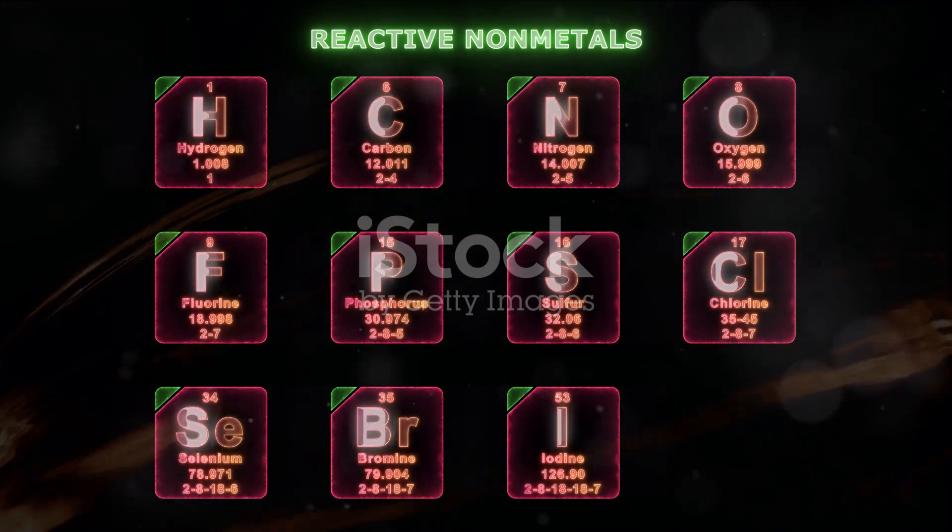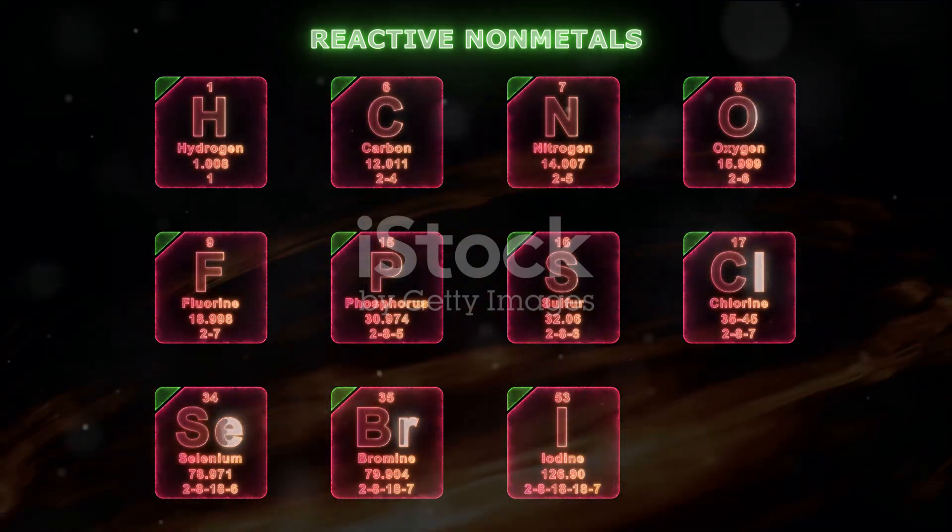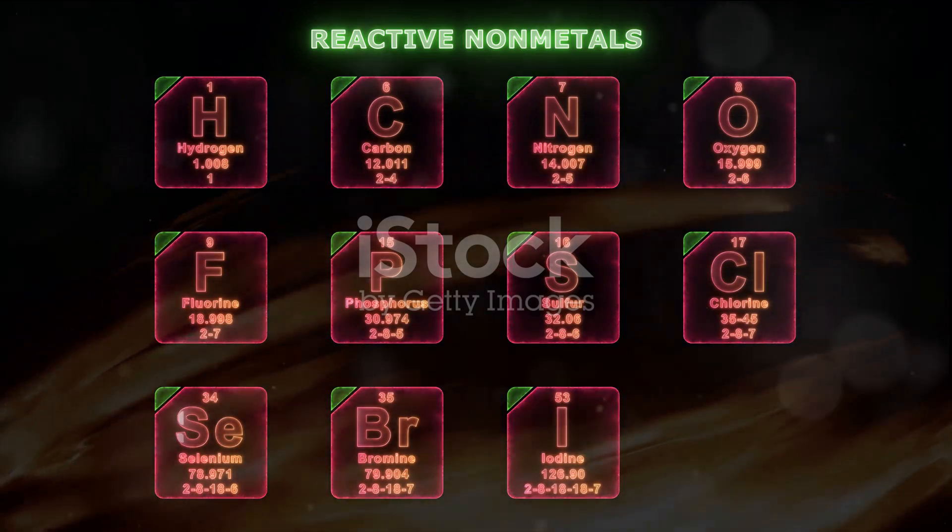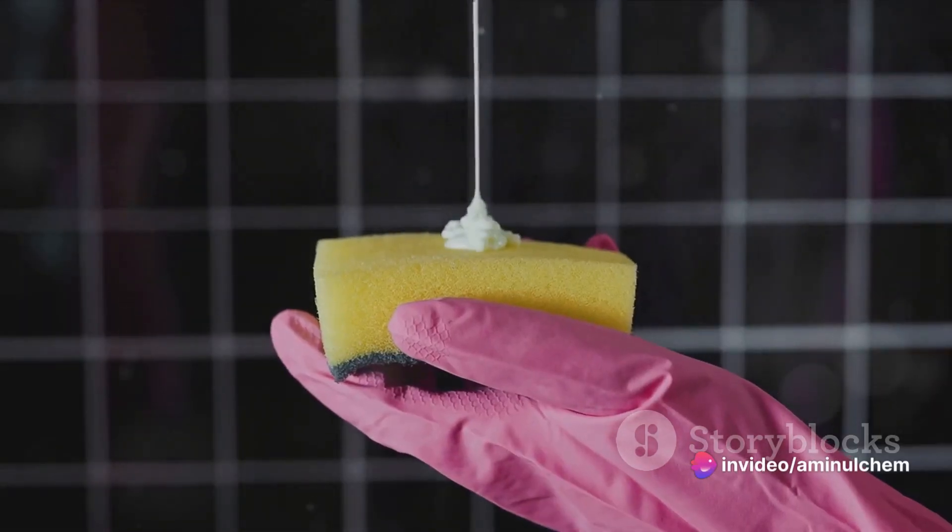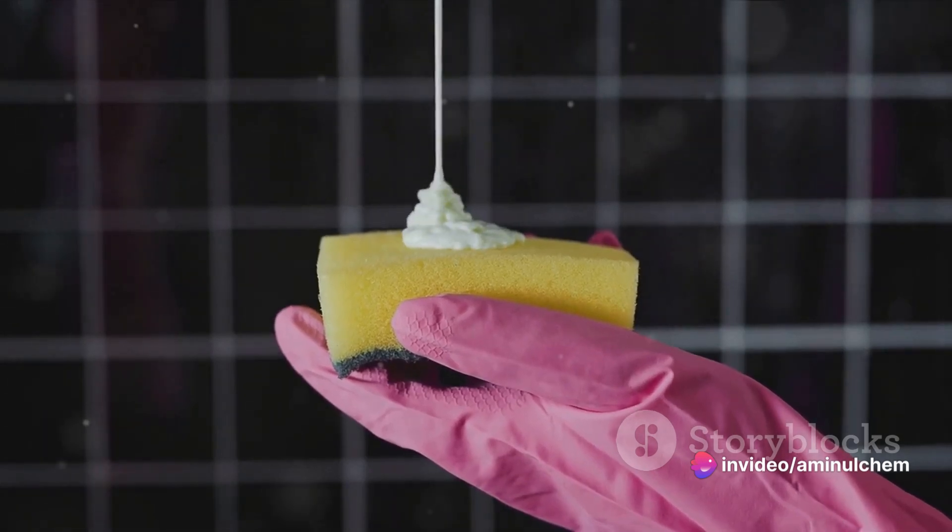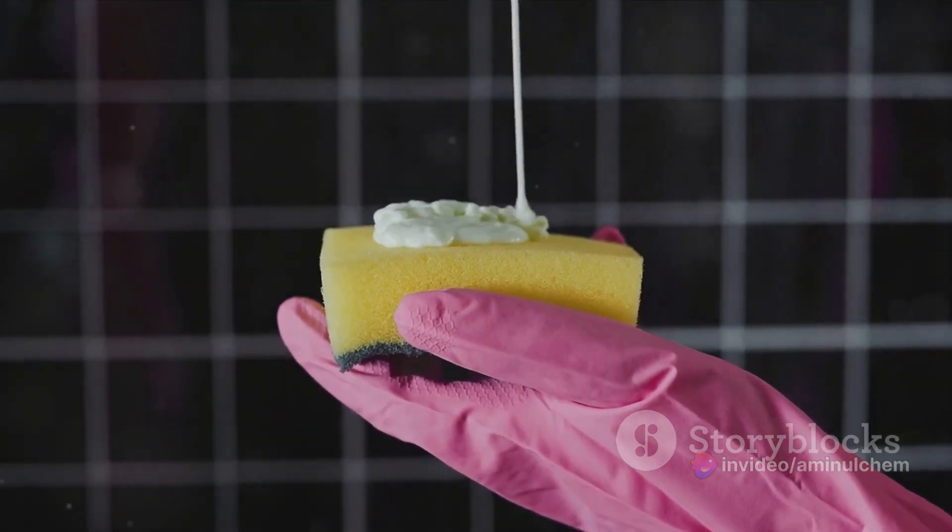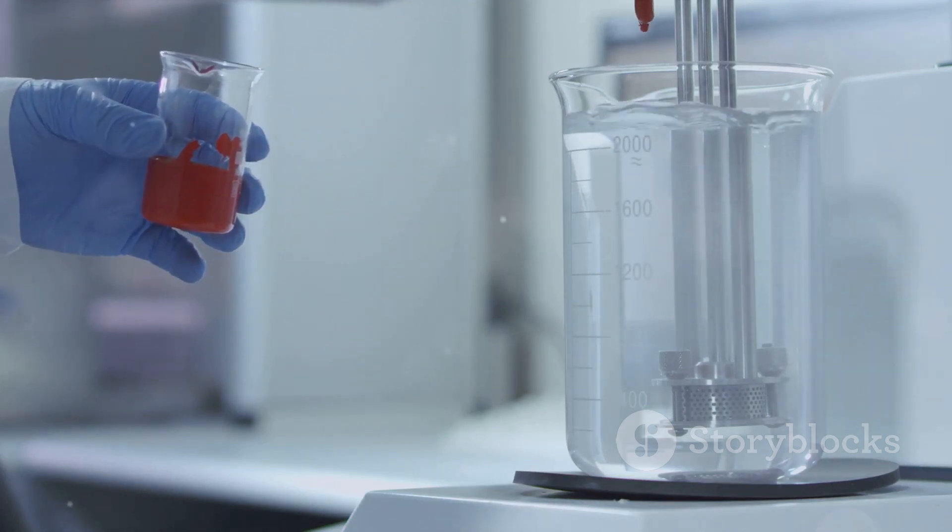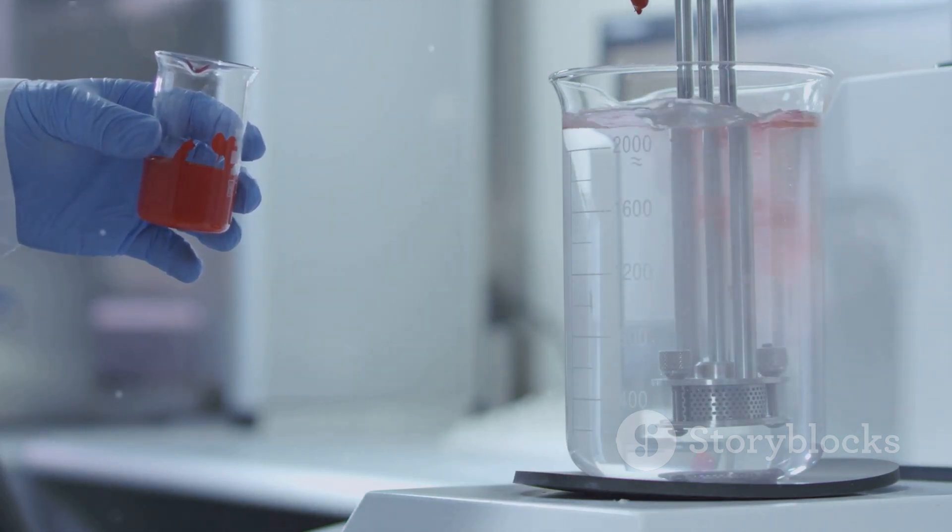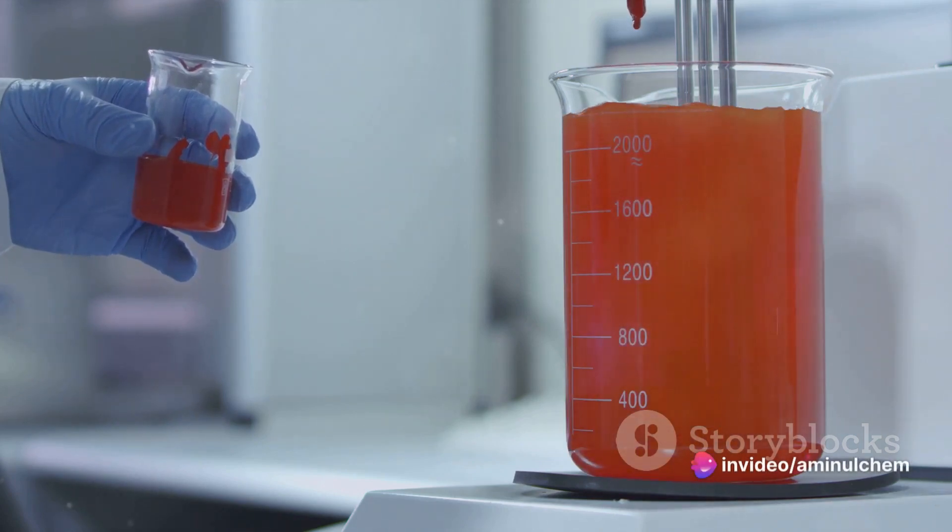Now there are some factors that can affect how quickly or efficiently this process occurs. The pH of the solution, for instance, can speed up or slow down the process. The initial concentration of the dye can also play a role. The reaction temperature and the intensity of the light can make a difference too. It's like adjusting the thermostat or the lighting in our hotel room to create the perfect conditions for the dye molecule's stay.